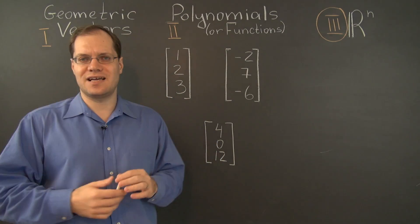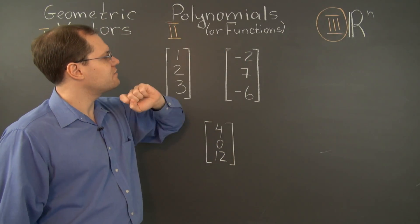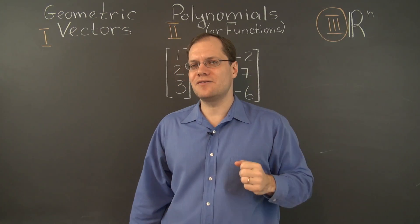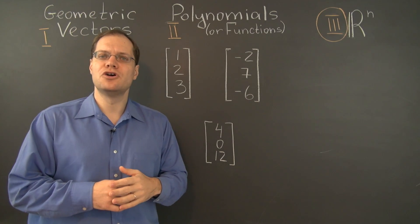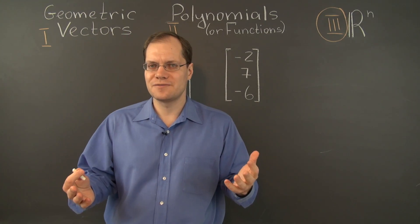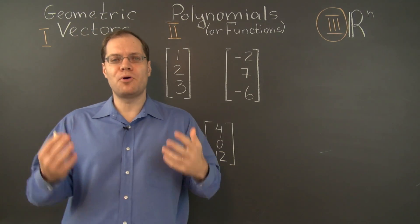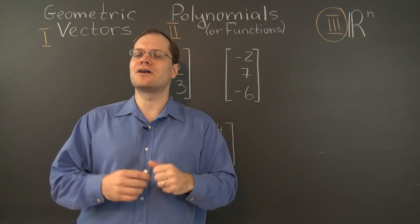We started with directed segments, then funny symbols on a piece of paper, and now sets of numbers. These examples couldn't be any more different, and it's amazing that these three types of objects are part of the same subject and the same course.